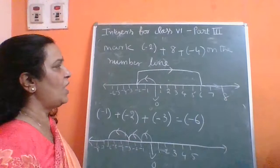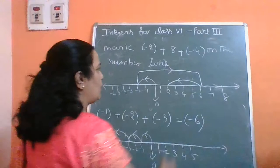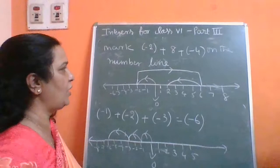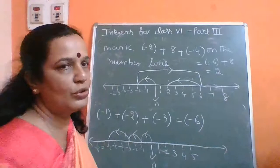Then come back 4 — that is minus 4 — towards the left side: 1, 2, 3, 4. Therefore you come to 2. That means minus 2 and minus 4 together give minus 6; when you add minus 6 plus 8, the answer is 2.